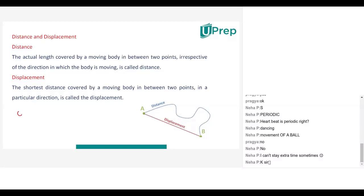Suppose an object is at position A at 8 a.m. The object is in this position at 8 a.m. Is object T in a state of motion or a state of rest? It's at point A. The position of the object is changing.